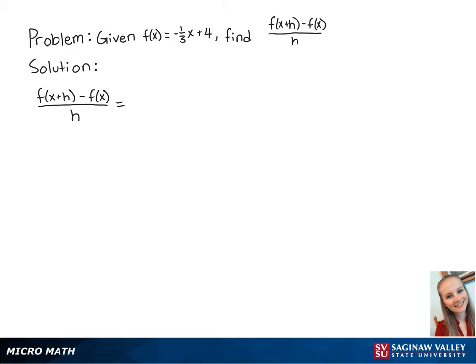First, we're going to plug in the function so that we have negative 1 third times x plus h plus 4 minus negative 1 third x plus 4 all over h.